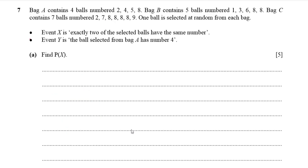Now let's discuss question seven. Bag A contains four balls numbered 2, 4, 5, 8. Bag B contains five balls numbered 1, 3, 6, 8, 8. Bag C contains seven balls numbered 2, 7, 4, 4, 8, 8, 9 — wait, that's four eights and other numbers. One ball only is selected at random from each bag.